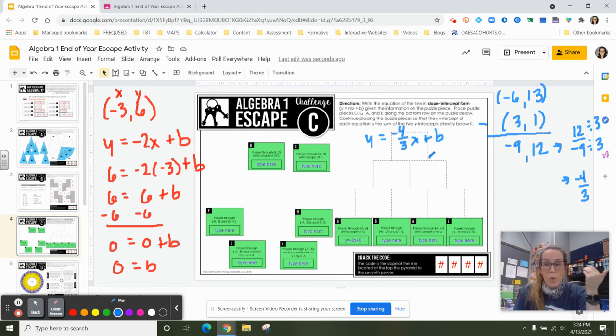Now I have to figure out what is my y intercept. And I can do that by grabbing either one of the points that they gave me and plugging into my equation. So I'm going to do 3 and 1 because it looks like a little easier numbers.